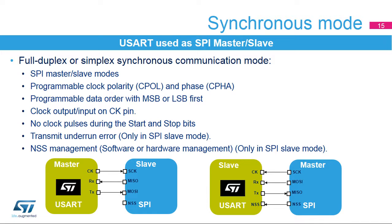The USART can also communicate synchronously. It can operate as an SPI in master or slave mode with programmable clock polarity or CPOL and phase or CPHA, and programmable data order with MSB or LSB first. The clock is output in master mode or input in slave mode on the CK pin. No clock pulses are provided during the start and stop bits. When the USART is configured in SPI slave mode, it supports the transmit underrun error and the NSS hardware or software management.